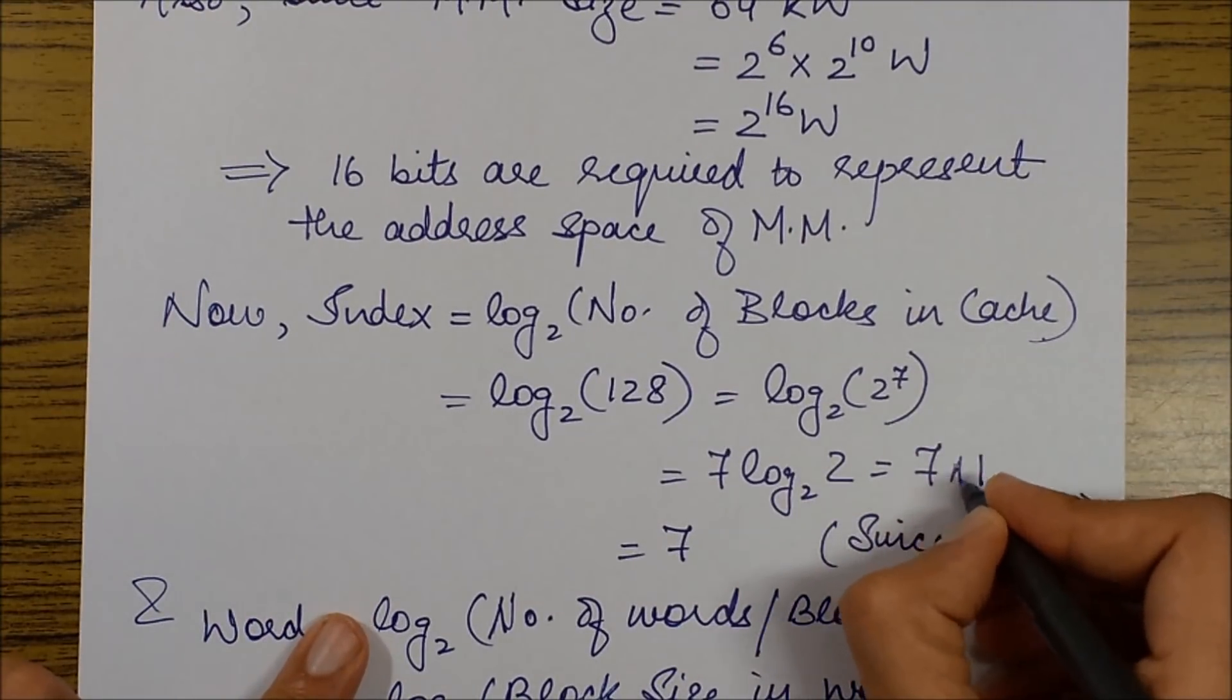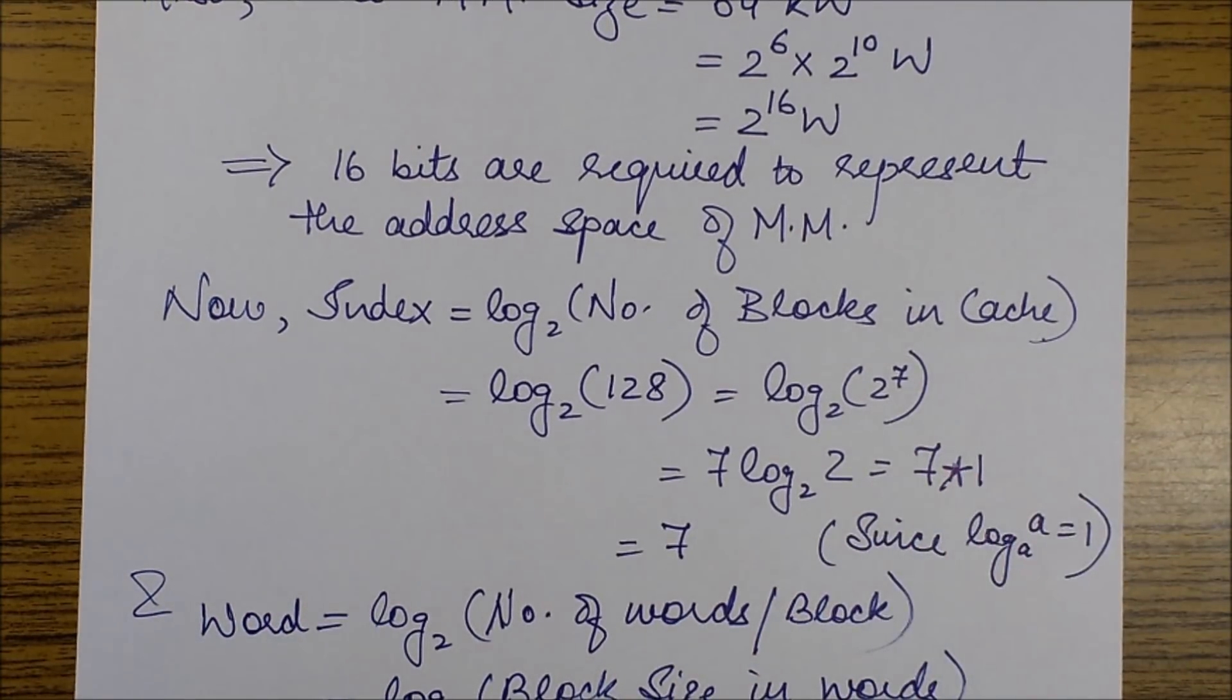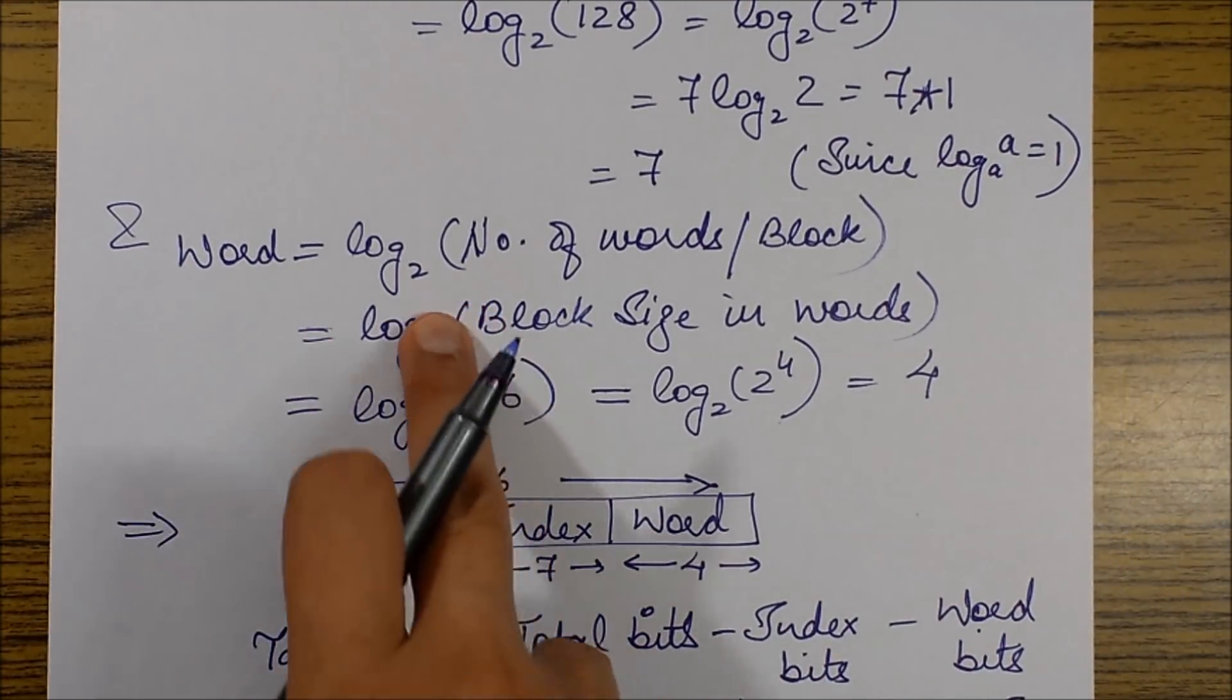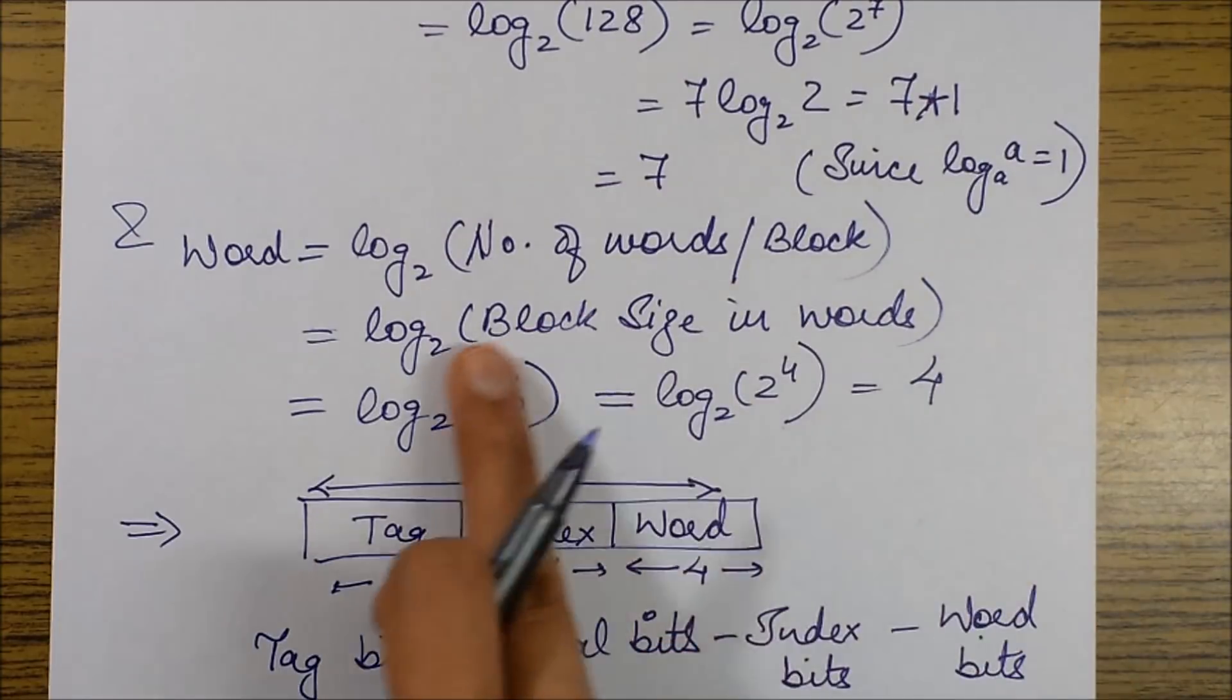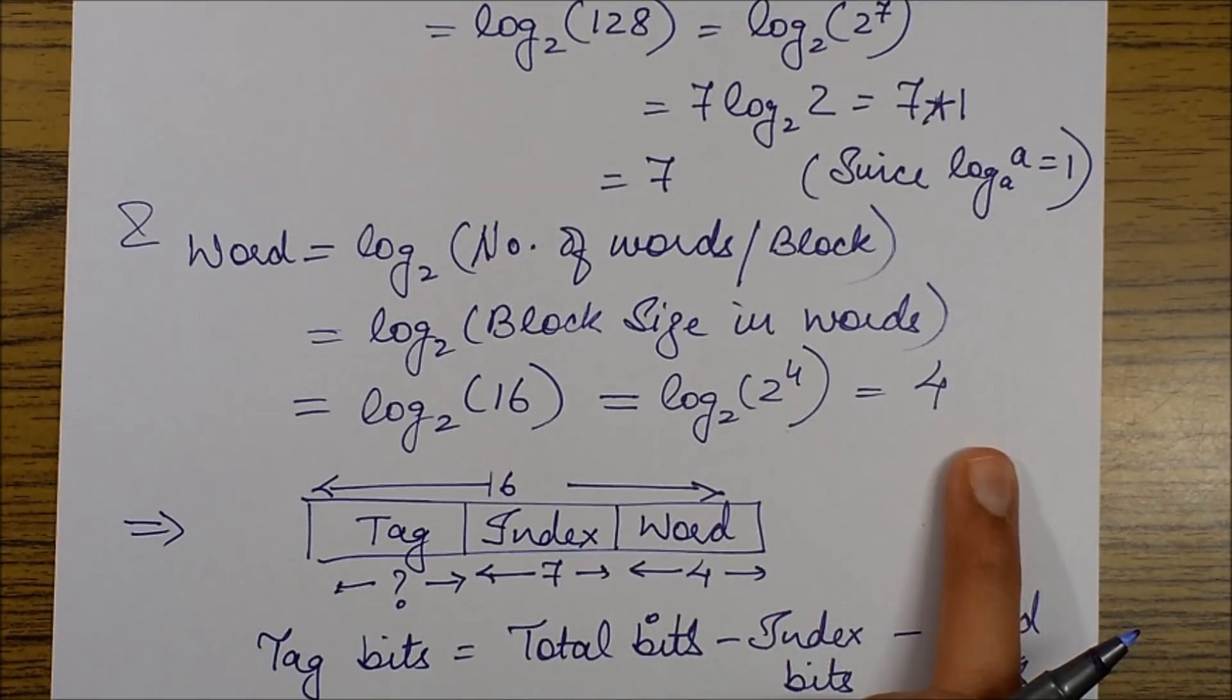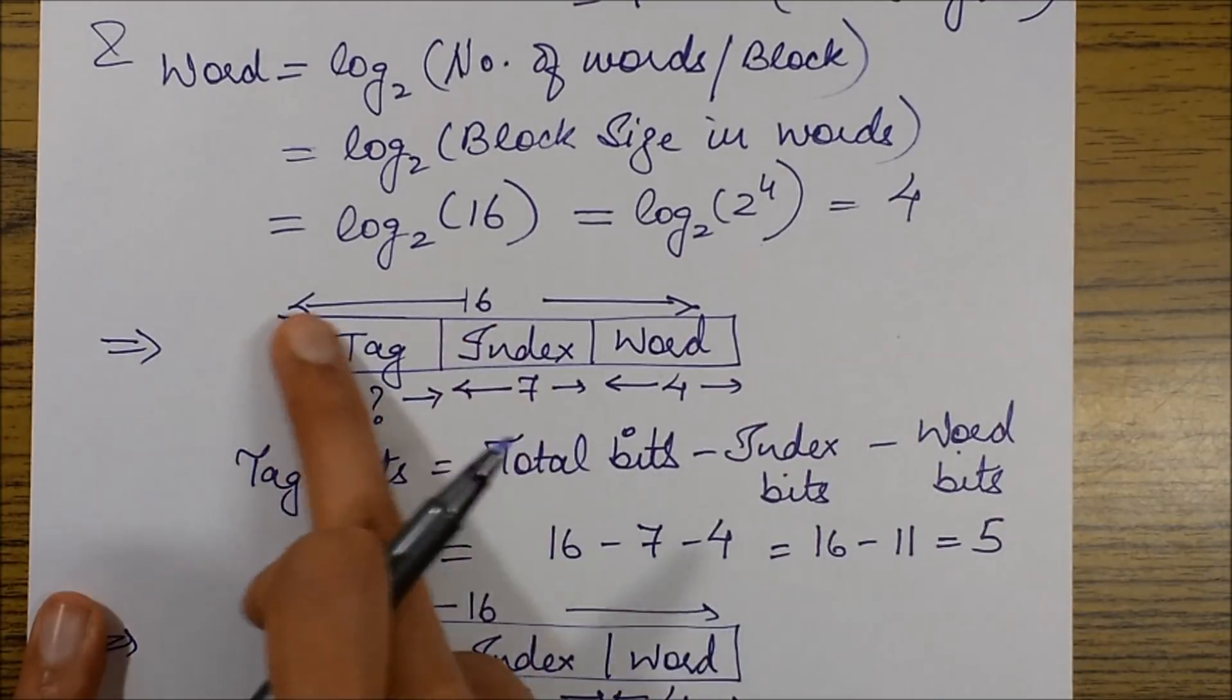Similarly, we calculate the word bits. It equals log₂(number of words per block), which is log₂(block size in words), which is given to us as 16 words. From here we get the word bits as 4.